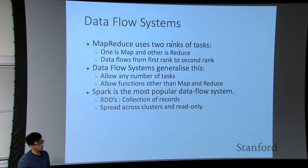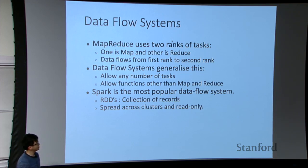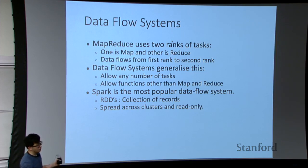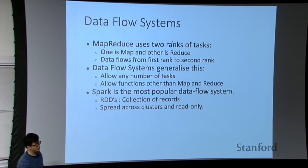We also learned about data flow systems. MapReduce is pretty strict — it only has two ranks of tasks: map and reduce. Data flow systems generalize this, so instead of just map and reduce, you can have any number of tasks with other functions such as join and subtract. Spark is the most popular data flow system right now.